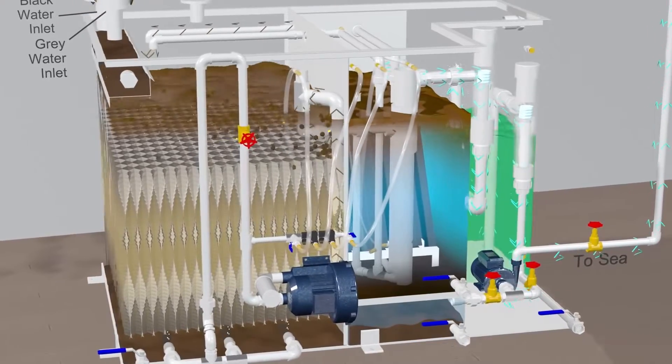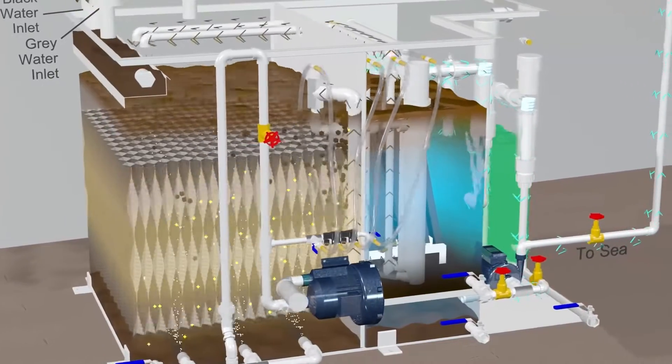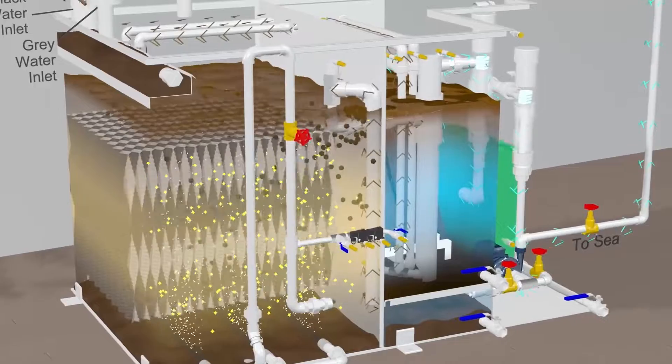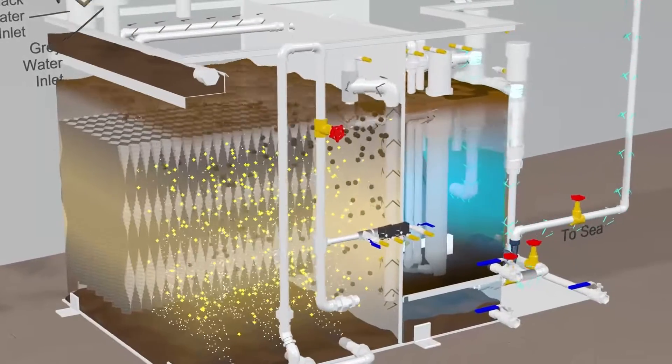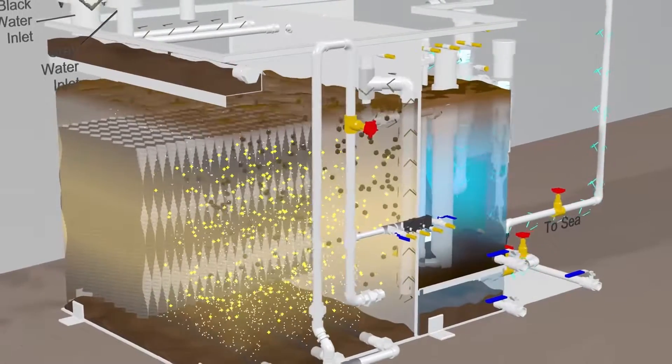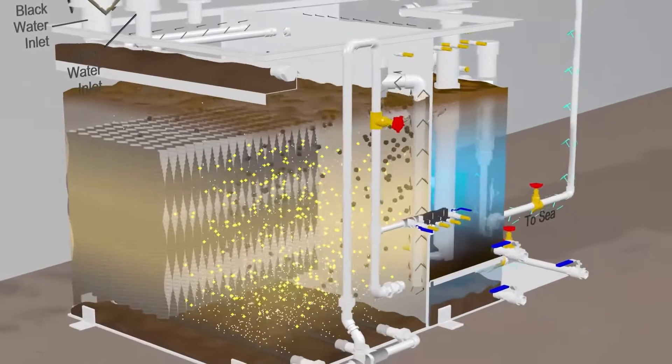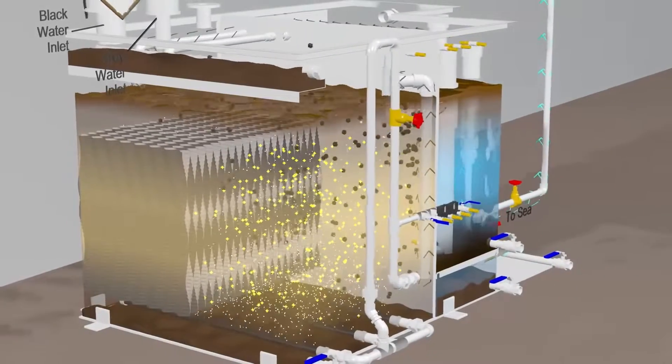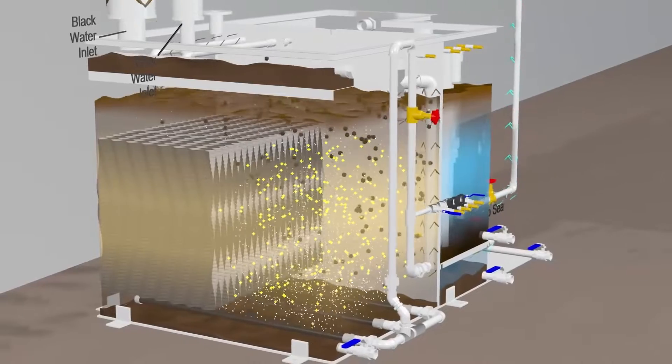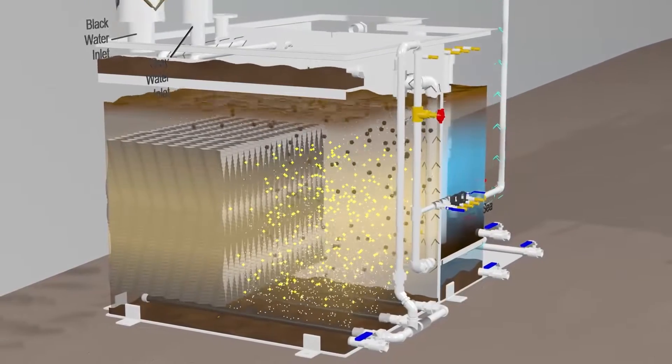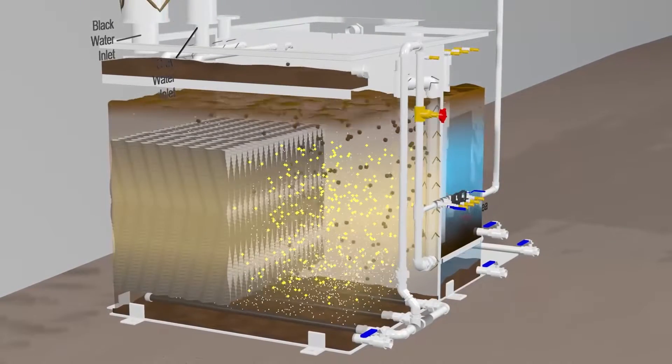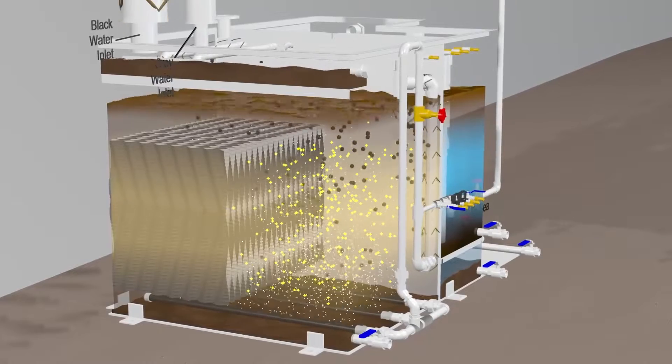The basic principle of a biological treatment plant is decomposition of raw sewage. This process is done by aerating the sewage chamber with fresh air. The aerobic bacteria survive on this fresh air and decompose the raw sewage, which can be disposed of in the sea.